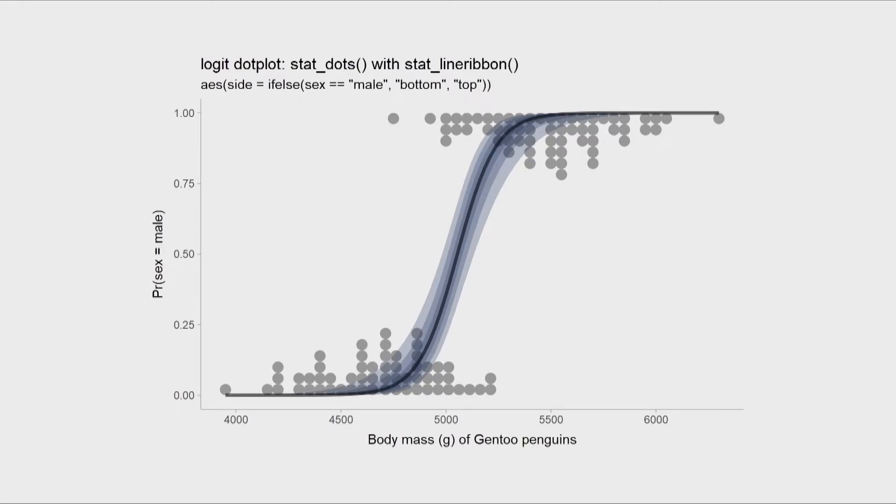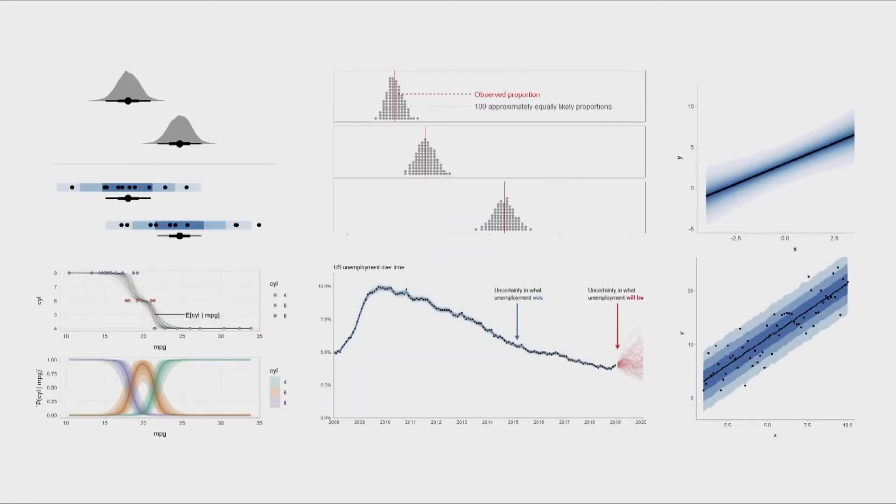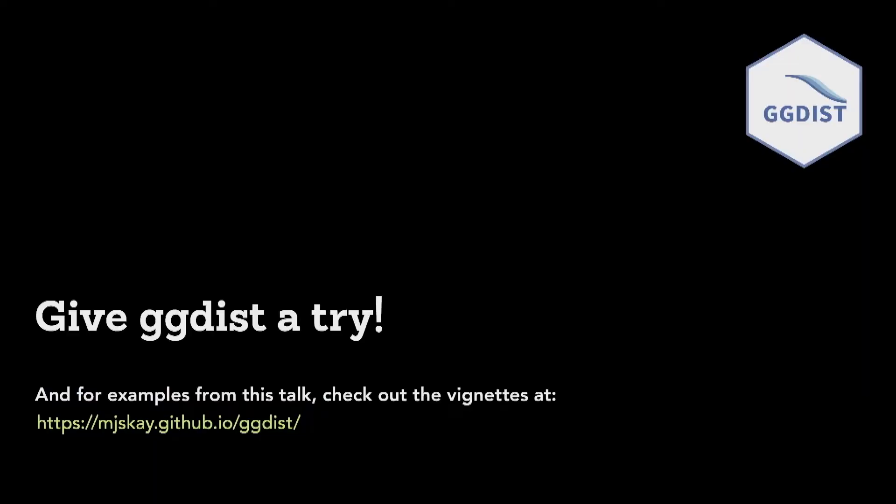So here, for example, this is what some people call a logit dot plot. Anyway, I hope that it convinced you that there's a lot of cool stuff you can do with ggdist. I haven't even really scratched the surface here. So please give ggdist a try. And for more of the examples from this talk, check out the URL below.